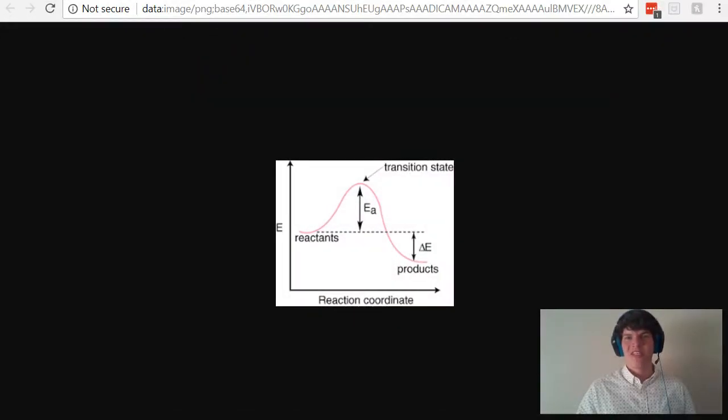To answer this question, we need to determine how the addition of a catalyst will affect this reaction coordinate diagram. When a catalyst is added, it's going to cause this hump of the activation energy to decrease in size. This means it will take less energy to get the reaction started.